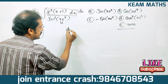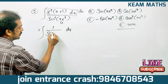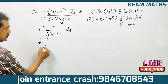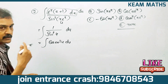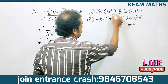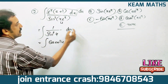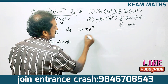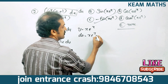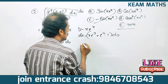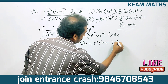Let u equal to x · e^x. The derivative of u is equal to x · e^x differentiated by the product rule: first into derivative of second plus second into derivative of first dx. So du equals e^x into (x plus 1) dx. The numerator becomes du, and the denominator becomes sin²(u).